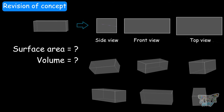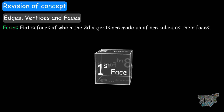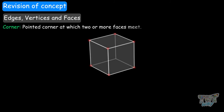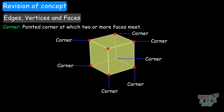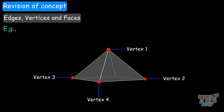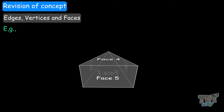Next, we will revise what are faces, edges, and vertices. Flat surfaces of which 3D objects are made up are called faces. The line at which these faces meet is called an edge. The pointed corners at which edges meet are called the vertices of a 3D object. Let's use this pyramid as an example — it has a pointed corner at which four faces meet. This is one vertex, and the other vertices are here, so in total it has five vertices. And the flat polygonal regions are these triangles and the base, a square — so it has five faces.